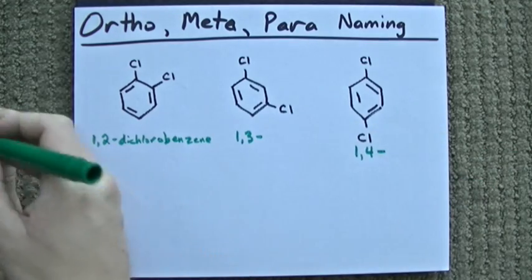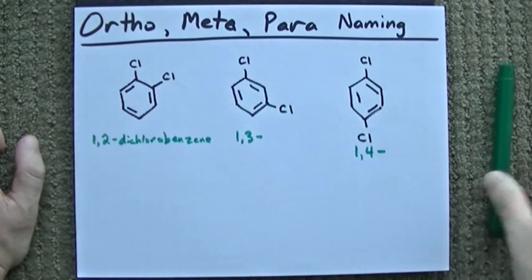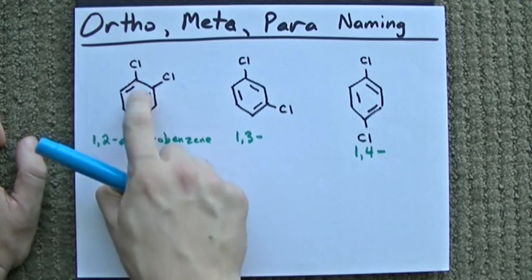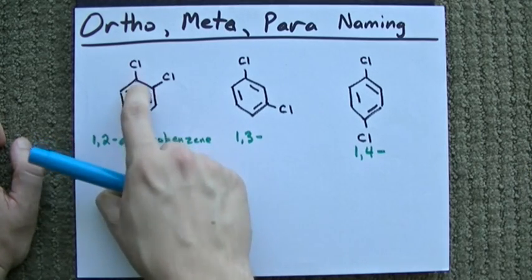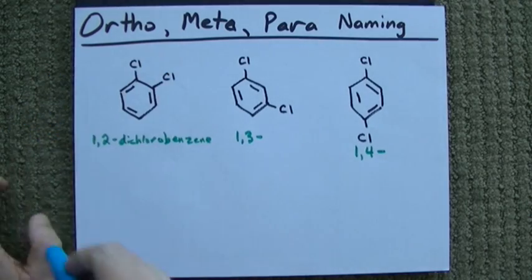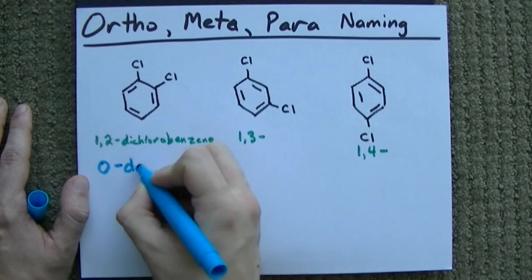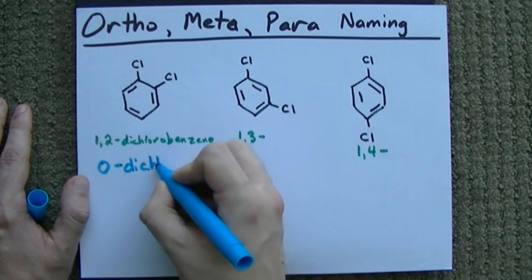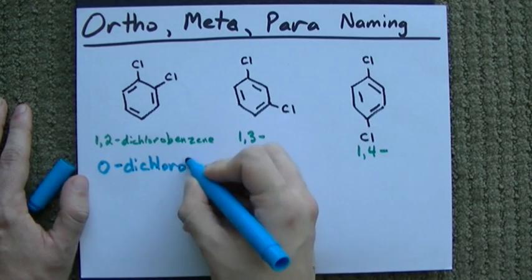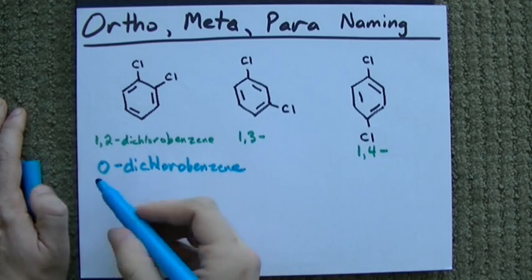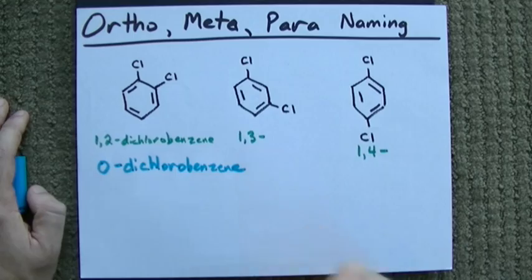Scientists came up with another way to name these. If the two substituents are right beside each other on the benzene, like carbon to carbon with something sticking out of both, we call that ortho. Rather than saying 1,2, we call it o-dichlorobenzene. There's still a hyphen, but the 'o' means the two chloros are right beside each other.